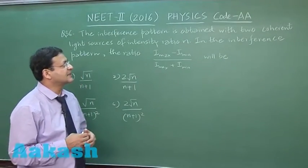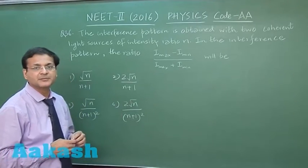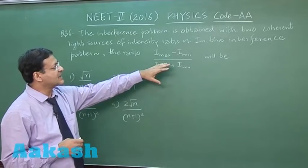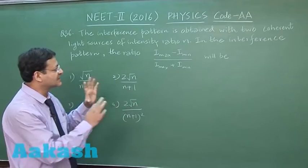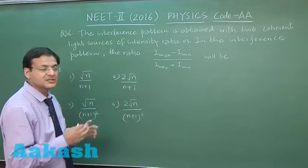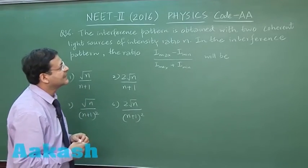Question 36 is a very standard question of Young's double slit experiment, and the expression which has been asked here, I_max minus I_min upon I_max plus I_min, has a standard formula: 2√n/(n+1). But if you want to prove it, remember, let us suppose the two coherent sources have the amplitude ratio a/b.